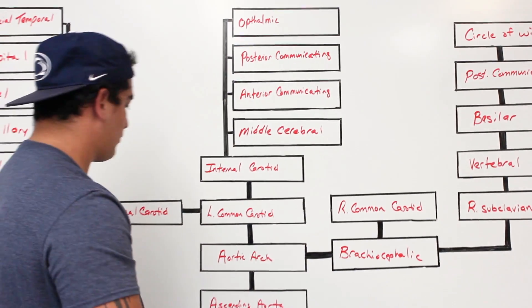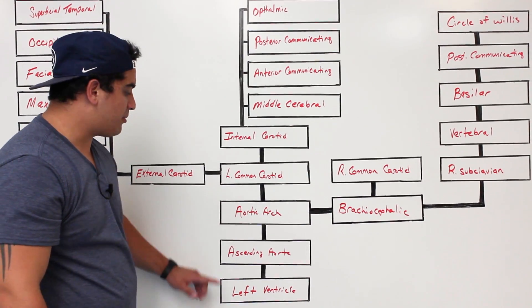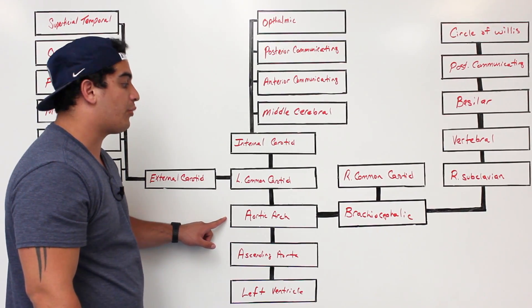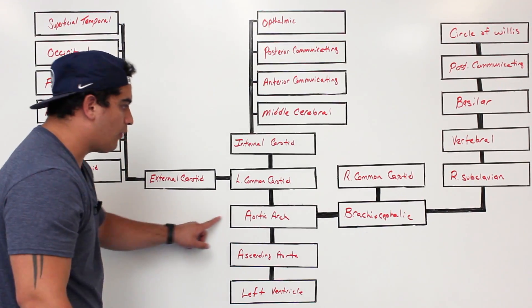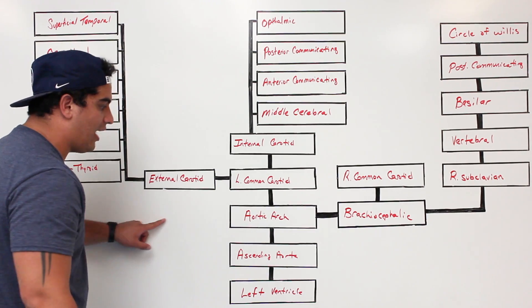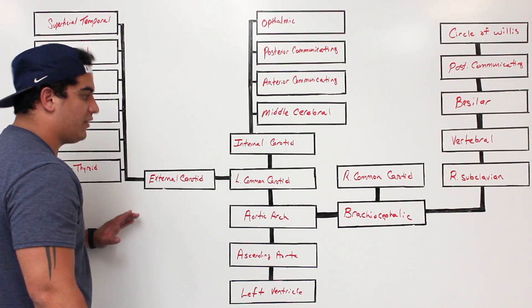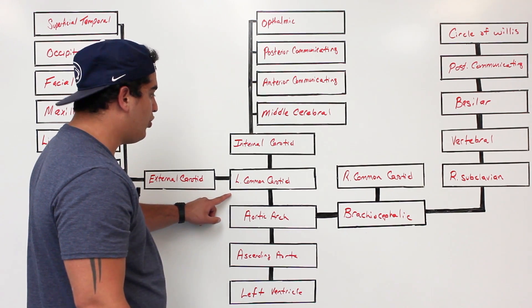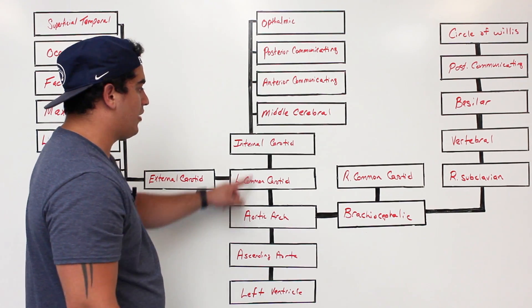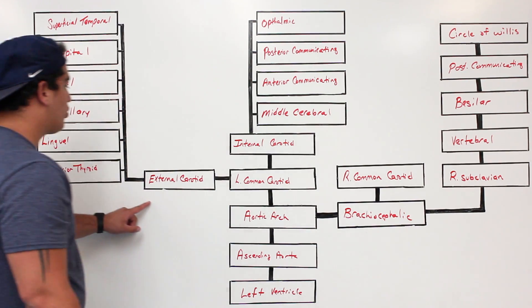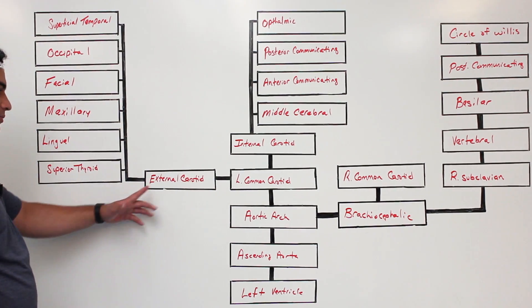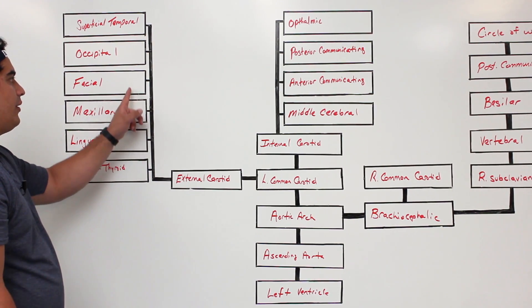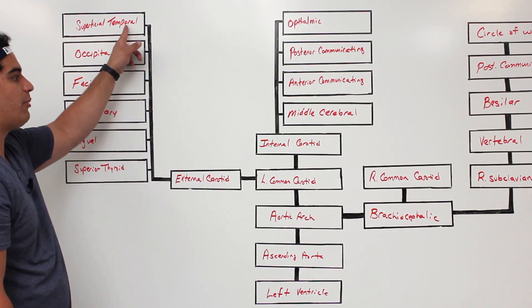To recap: the left ventricle pumps blood into the ascending aorta, which goes into the aortic arch. From the aortic arch there are three branches: the left subclavian giving off vertebrals, the left common carotid splitting into external and internal carotid, and the brachiocephalic. The external carotid supplies external structures via the superior thyroid, lingual, maxillary, facial, occipital, and superficial temporal arteries.